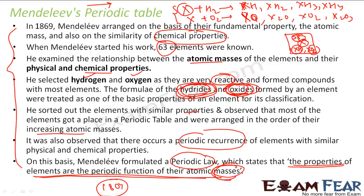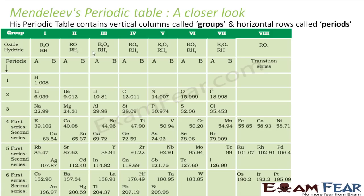He reacted elements with hydrogen and oxygen, found different hydrides and different oxides, and based on the hydrides and oxides found, he clubbed these elements and arranged them in order of increasing atomic mass. The oxide formulas were: R2O, RO, R2O3, RO2, R2O5, RO3, R2O7, and RO4. The hydride formulas were: RH, RH2, RH3, RH4.